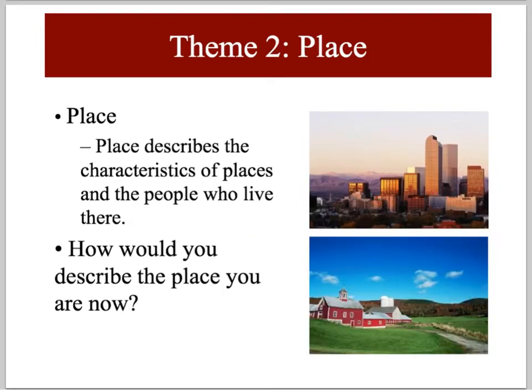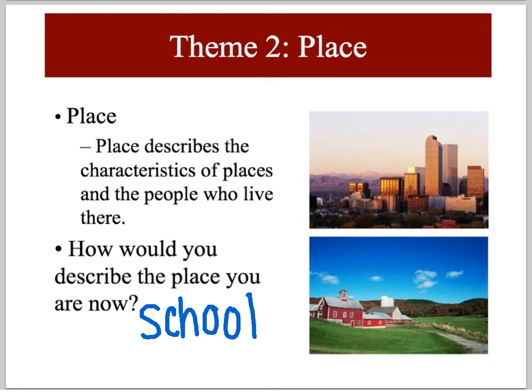The second theme is place. Place describes the characteristics of the location and the people who live in that location. How would you describe the location that you live in? Would it be a city? A suburb? Do you live on a farm or in the countryside? How would you describe the place that you are right now? Look around — what kind of characteristics do you see? I would call the place we are right now a school.